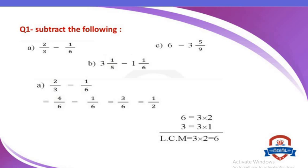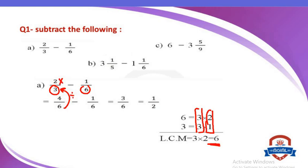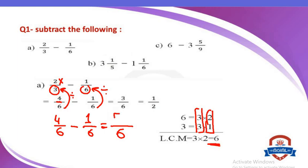Question number 1: subtract the following — 2 over 3 minus 1 over 6. The denominators I have are 3 and 6. I will find the LCM for 3 and 6. 3 times 2 equals 6, so the LCM is 6. The new denominator is 6. 6 divided by 3 equals 2; 2 times 2 equals 4. 6 divided by 6 equals 1; 1 times 1 equals 1. So the new fractions are 4 over 6 minus 1 over 6. 4 minus 1 equals 3, so the answer is 3 over 6.